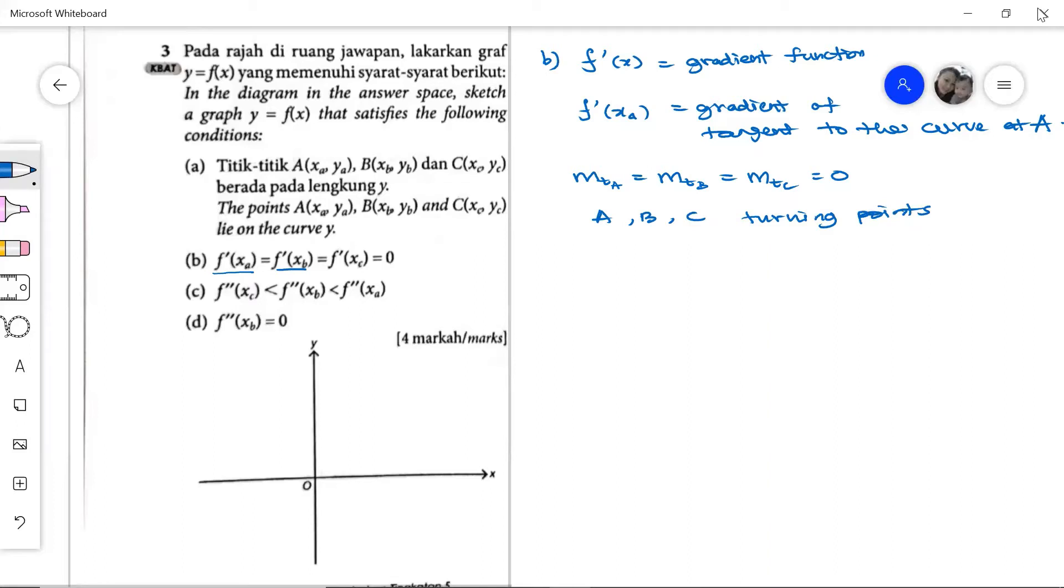It's either positive or negative. And then we have another information that this f'' indicates the second order of derivative. Normally, we use the second derivative to check whether it is maximum or minimum. And we know that the second order of derivative at point c is the smallest, followed by point b, followed by point a.